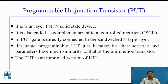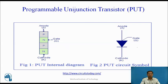PUT is a 4-layer PNPN solid-state device. It is also called as a Complementary Silicon Controlled Rectifier. In PUT, the gate is directly connected to the sandwiched n-type layer. Its name, Programmable UJT, is given just because its characteristics and parameters have much similarity to that of the Unijunction Transistor. The PUT is an improved version of UJT. Figure 1 is the internal diagram of PUT, where the gate is connected to the end region. Figure 2 is the PUT circuit symbol.